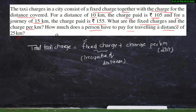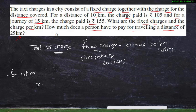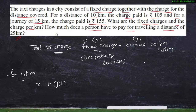For a distance of 10 kilometers the total charge paid is ₹105, and for a distance of 15 kilometers the charge paid is ₹155. Now I will develop the equations. Let us assume the fixed charge as x and the charge per kilometer as y. For a 10-kilometer journey, the total taxi charge will be: fixed charge plus charge per kilometer into total distance covered, that is x plus 10y.